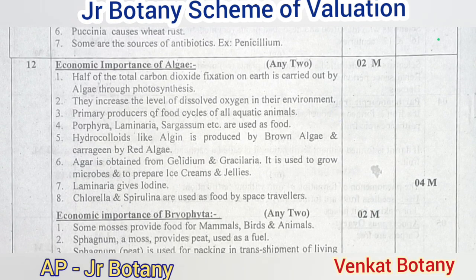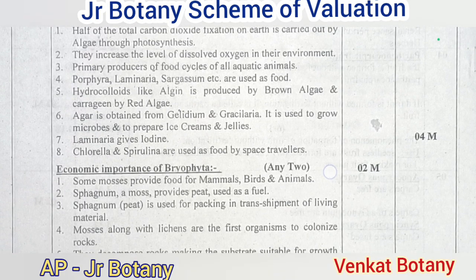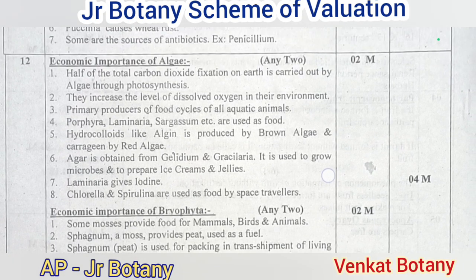The 12th question: write a note on the economic importance of algae and bryophytes. Half of the total carbon dioxide fixation on earth is carried out by algae through photosynthesis. They increase the level of dissolved oxygen in their environment. Algae are the primary producers of food cycles for all aquatic animals. Kelp, laminaria, or sargassum are used as food. These eight points are considered as four marks total.